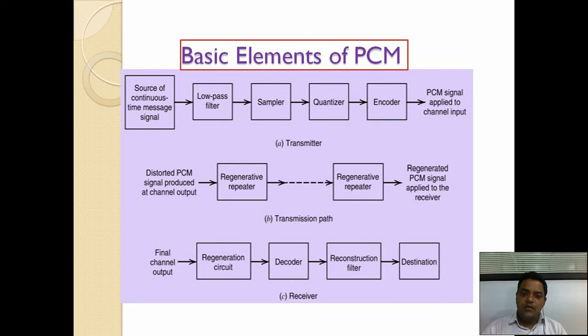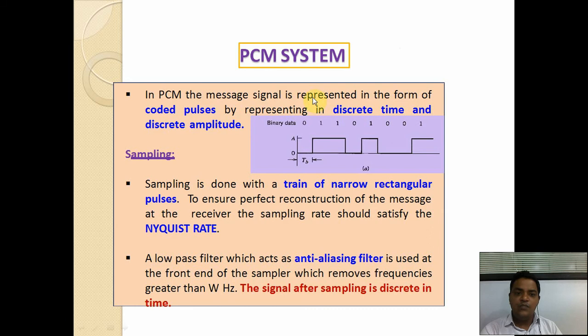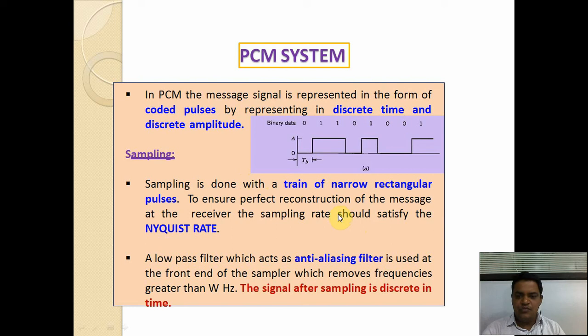In the PCM system, the message signal is represented in the form of coded pulses in discrete time and discrete amplitude — that is binary data: 0, 1, 1, 0, 1, 0, 0, 1. Sampling is done with a train of narrow rectangular pulses to ensure perfect reconstruction at the receiver. The sampling rate should satisfy the Nyquist rate, which states the sampling frequency is twice the modulating frequency, also called the sampling theorem.